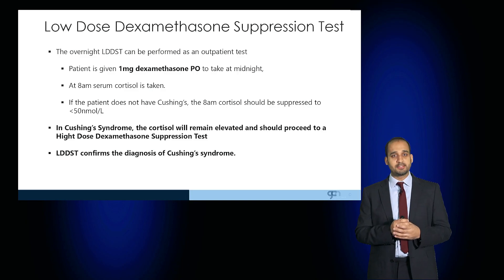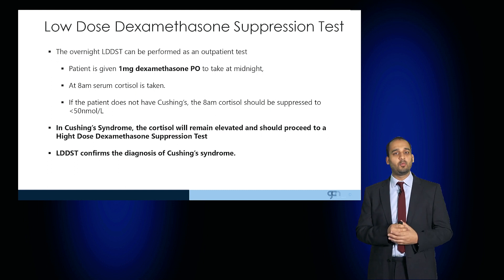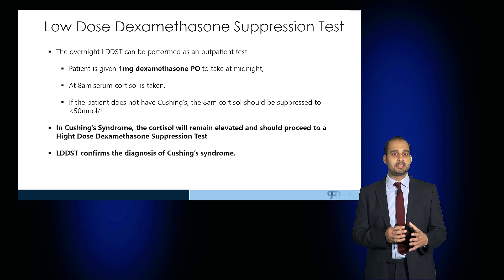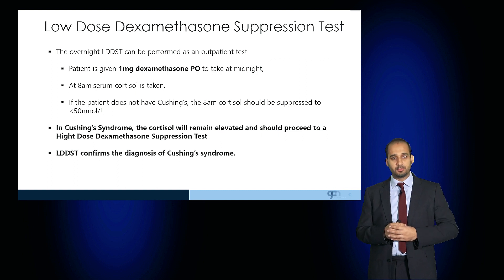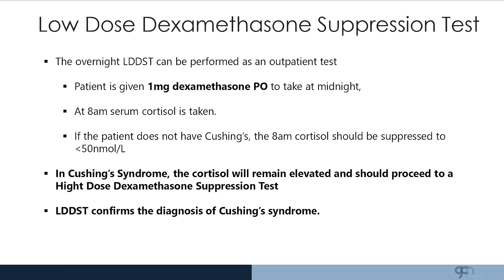The low dose dexamethasone suppression test is an outpatient test. The patient is given one milligram of dexamethasone to take at midnight, and in the morning at 8am the serum cortisol is measured. If the patient does not have Cushing's, the 8am cortisol will be suppressed due to the exogenous steroid. In Cushing's Syndrome, the cortisol level remains elevated, and if so, the patient proceeds to a high dose dexamethasone suppression test.